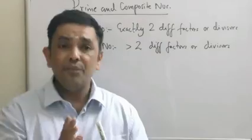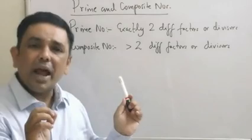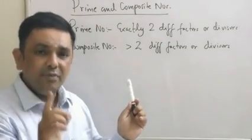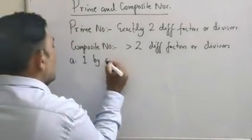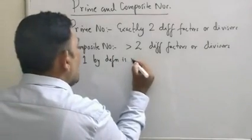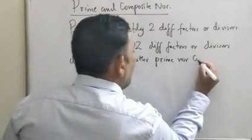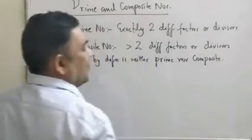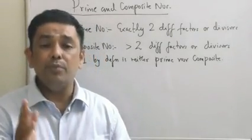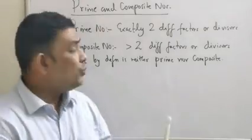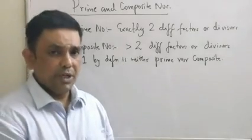Now here comes the interesting part — what about one? Please appreciate: one has got only one factor, that is itself. And therefore, by this definition, one is neither prime nor composite. That will be our first learning: one, by definition, is neither prime nor composite. It does not fit into the category of prime numbers, nor does it fall into the category of composite numbers.